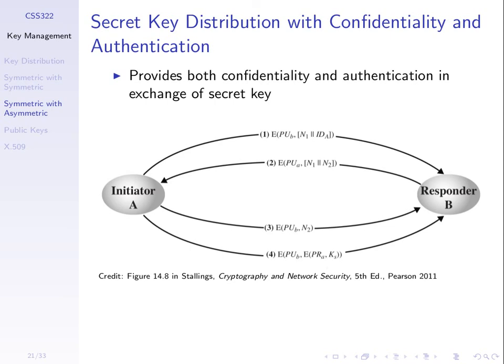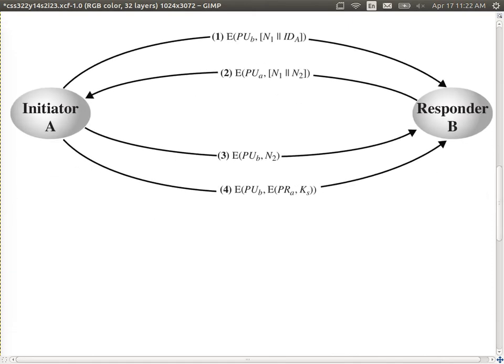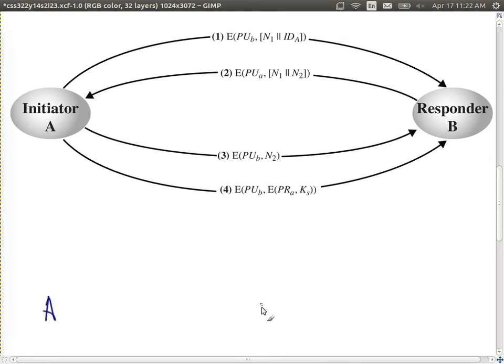The last message contains the actual session key: A generates a session key, signs it by encrypting with its private key, and then encrypts with B's public key. Two operations of public key cryptography: the private key to sign and confirm it came from A, and the public key for confidentiality so no one else can decrypt. Let's look at some attacks on that and see how this mechanism works.